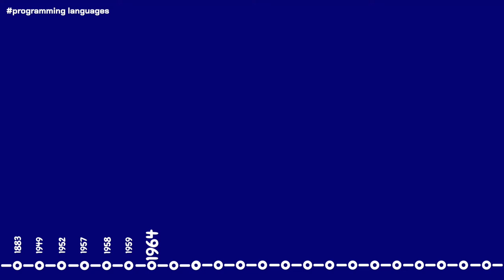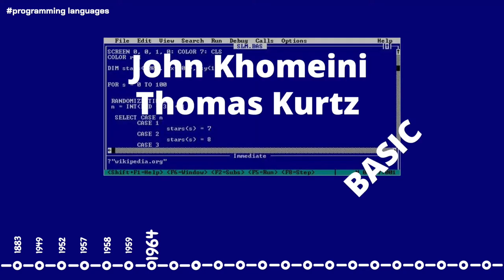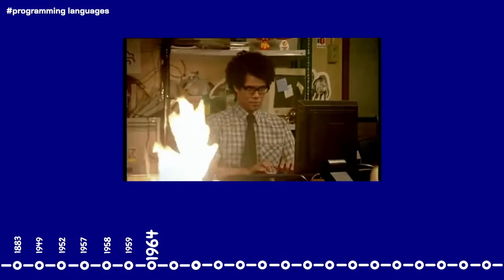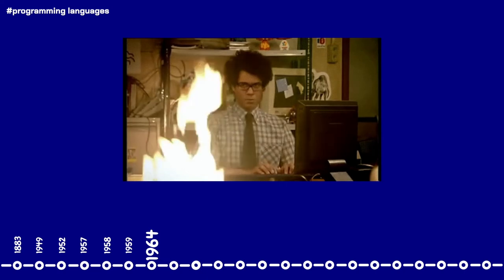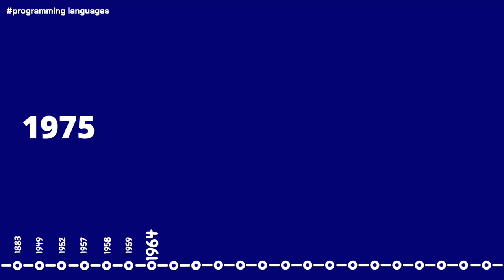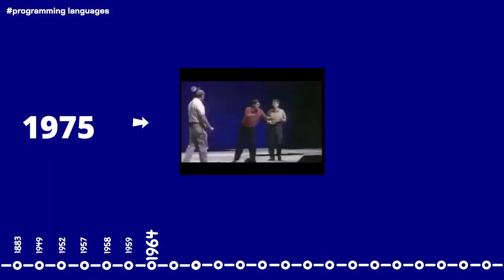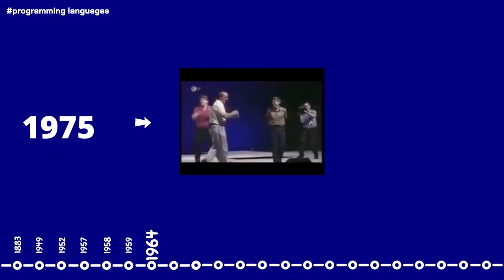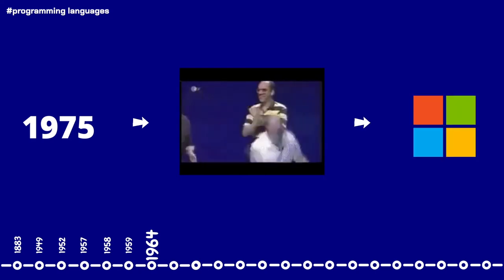In 1964, the programming language BASIC was produced by John Kemeny and Thomas Kurtz at Dartmouth College. As the name implies, BASIC was designed for students who didn't have a strong background in mathematics, so that students would still be able to effectively use computers. BASIC stands for beginners' all-purpose symbolic instruction code. Later, in 1975, Bill Gates and Paul Allen would alter BASIC, which would become one of Microsoft's first products.